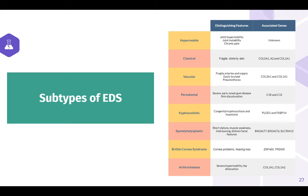This chart outlines some of the different subtypes of EDS, with the most common listed at the top. It's interesting to note that hypermobile EDS has a very complex genetic mechanism that has not fully been characterized yet. We will dive further into this when we discuss our interview with a scientist. The COL gene family encodes different collagen proteins, and mutations in this family are extremely common among EDS patients. Other genes, like the PLOD1 gene, also aid in the production of collagen.